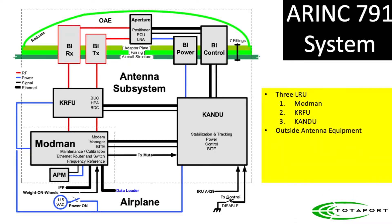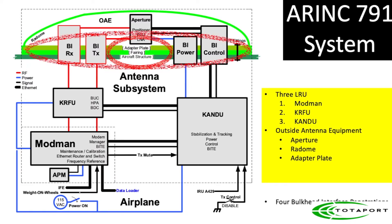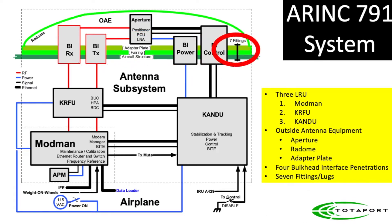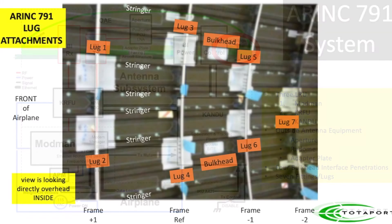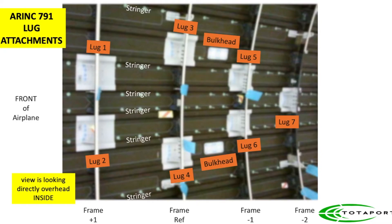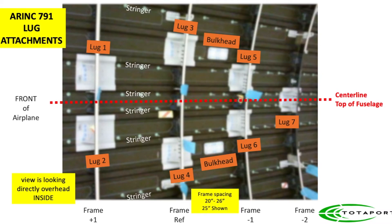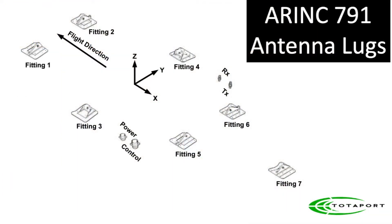The outside antenna equipment includes the aperture, the radome, an adapter plate, bulkhead penetrations, and seven fittings and lugs. Here you can see the seven lug locations — that's looking up from inside the airplane. There's the center line along the top of the fuselage. The lugs are aligned on frames which go around the airplane fuselage, spaced about 20 to 26 inches apart. This view is from outside looking at the top of the airplane, where the lugs are bolted to the airplane structure.